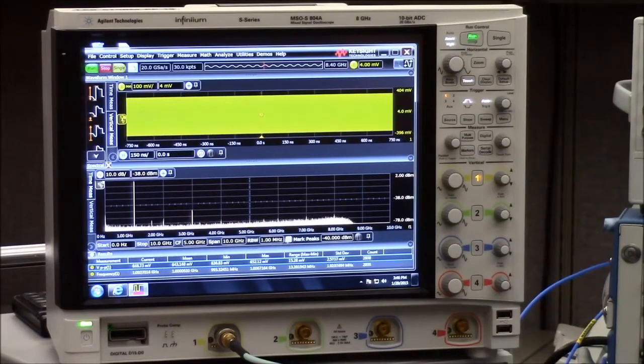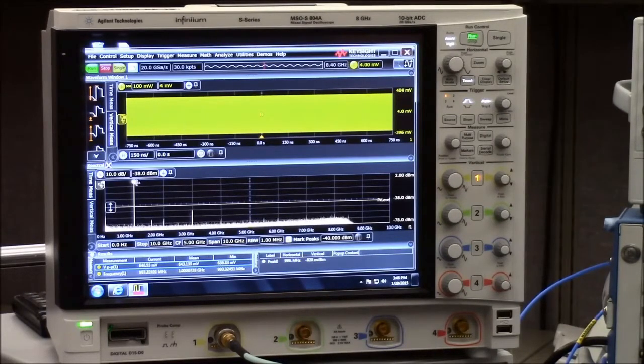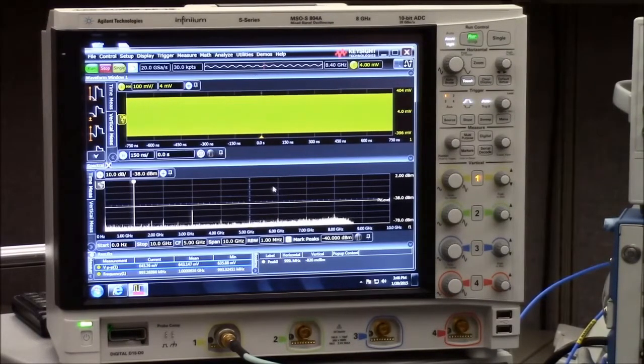If I check mark peaks, it finds that top peak and tells me that that's at basically 1 GHz and right hovering there at 0 dBm. So this is what we would expect for a basic measurement.